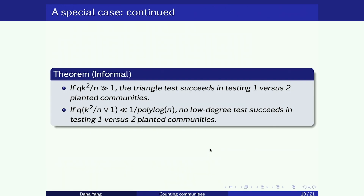This is our informal theorem under this toy model. If Q times K squared is larger than one, the signed triangle test succeeds in testing one versus two planted communities. If Q K squared is much smaller than one (up to polylogarithmic factors), or when K is much smaller than root N — the regime where even under the planted clique model you cannot reliably test — then there are no low-degree tests that succeed in distinguishing the two communities. In the regime where K is larger than root N, our upper and lower bounds match up to polylogarithmic factors.